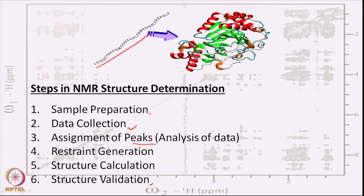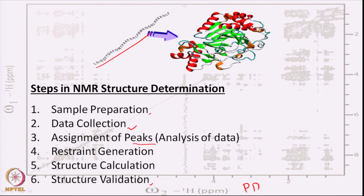After structure validation, if it is a good quality structure, we deposit it in the Protein Data Bank (PDB), which is the single repository for all structures determined by scientists worldwide, where you can look at the coordinates of each structure.